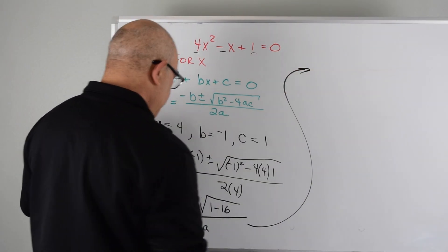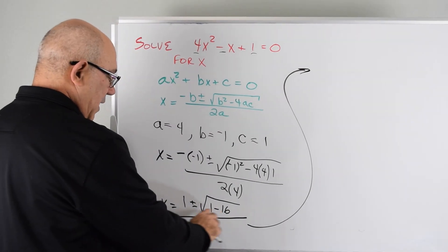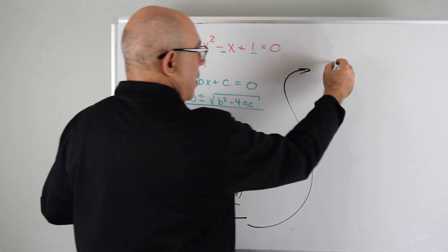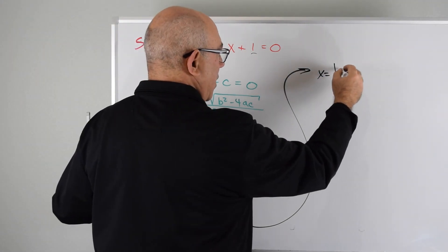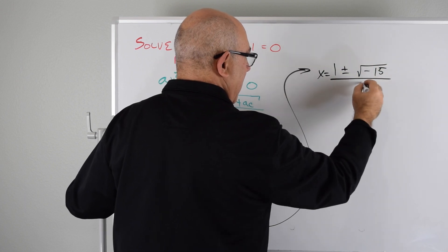All right, so if we take that up here, we can simplify this to be -15, keep everything else the same. So x equals 1 plus or minus the square root of -15 divided by 8.